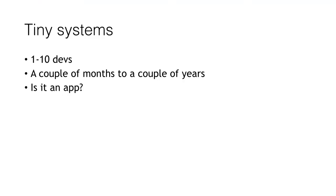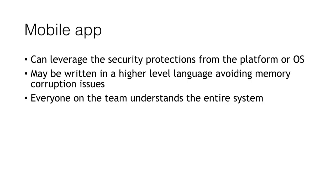Tiny systems — like a mobile app with only a couple of folks working on it. This kind of system doesn't implement very much itself; it leverages underlying APIs from the platform or OS. Everything is abstracted away from the developer — crypto, storage, communication, even memory management in a higher-level language, so you don't have to worry about memory corruption. You know a project is tiny if everyone on the team understands the whole project completely. Just get that set of folks together, bang it out, then revisit — maybe only when you do a major upgrade, perhaps once a year.